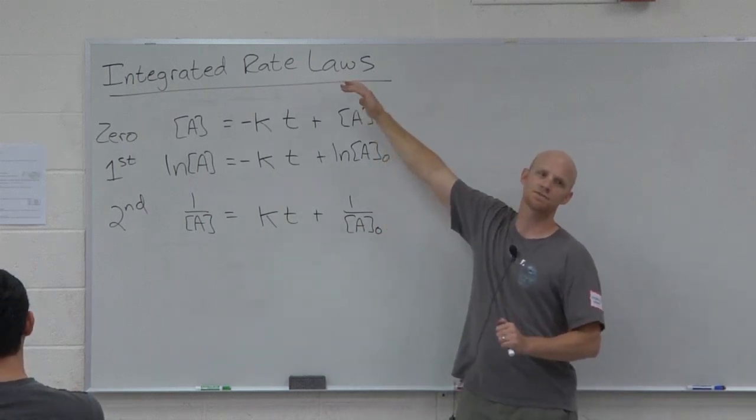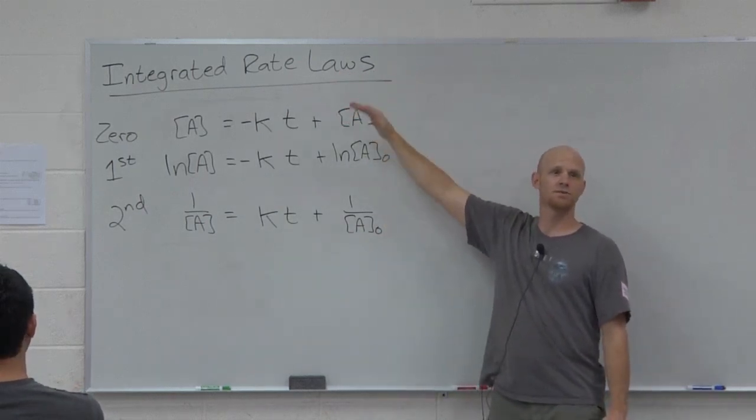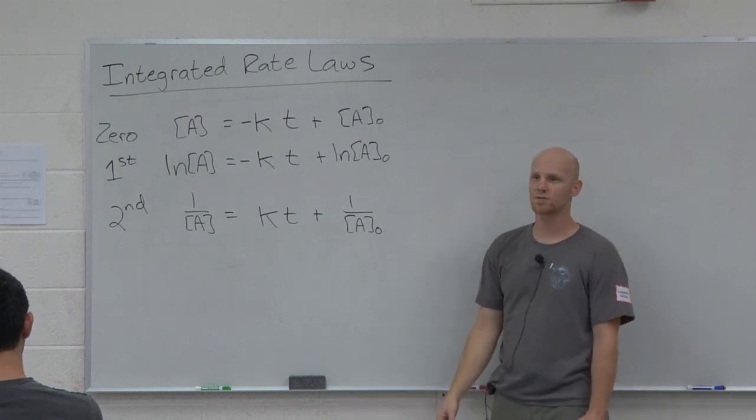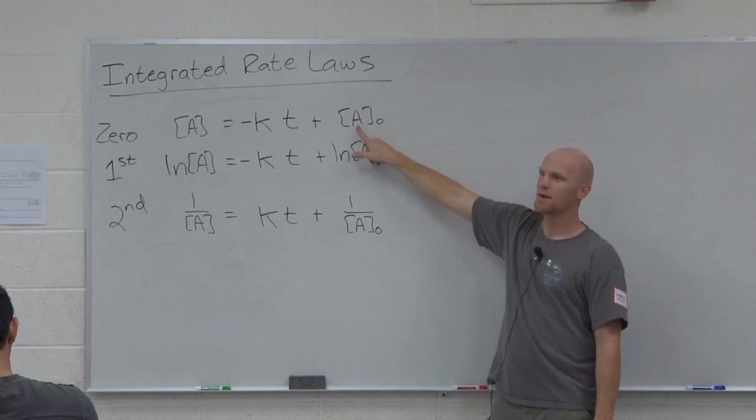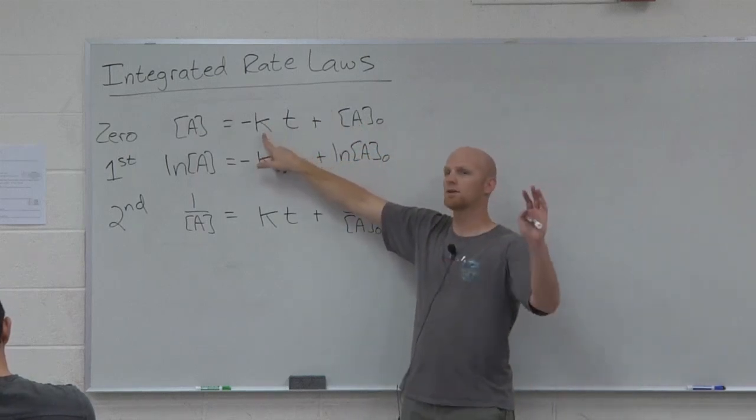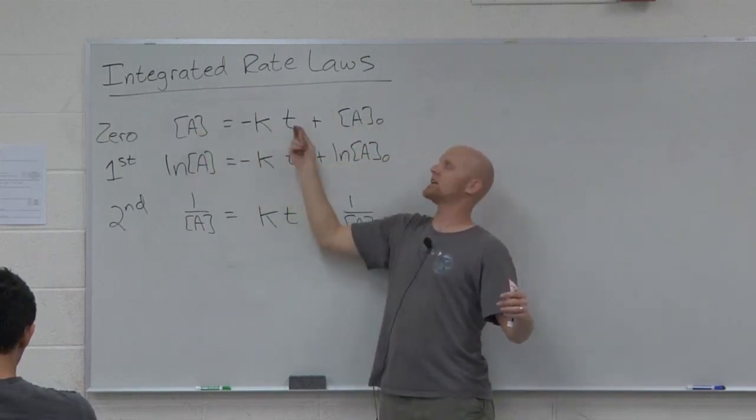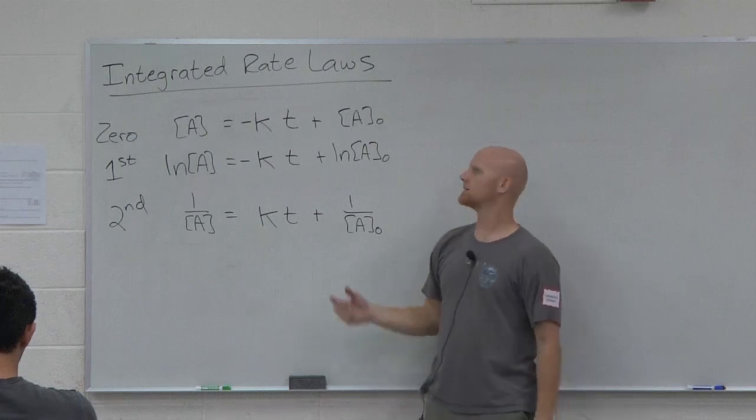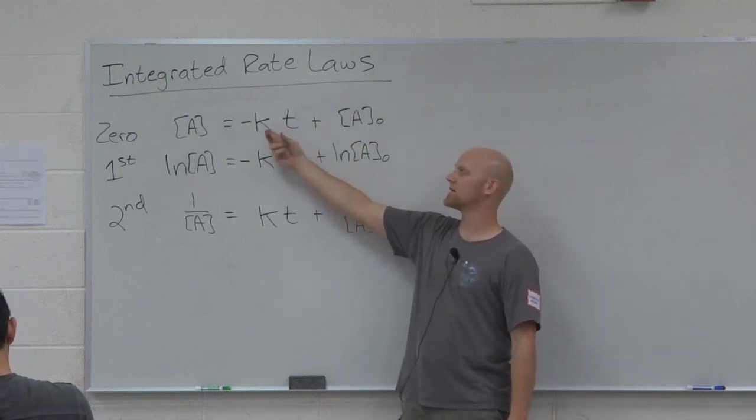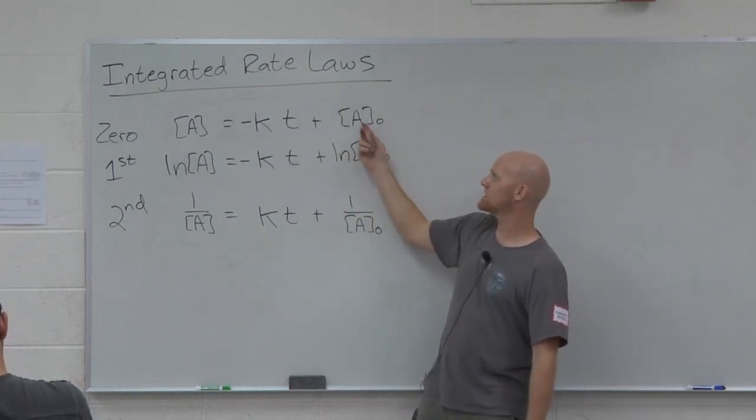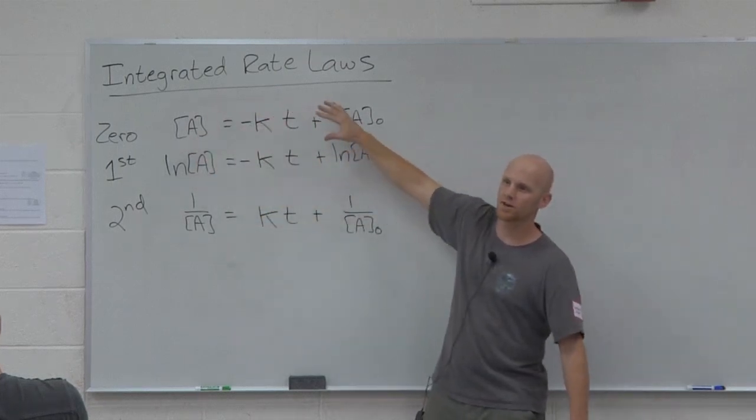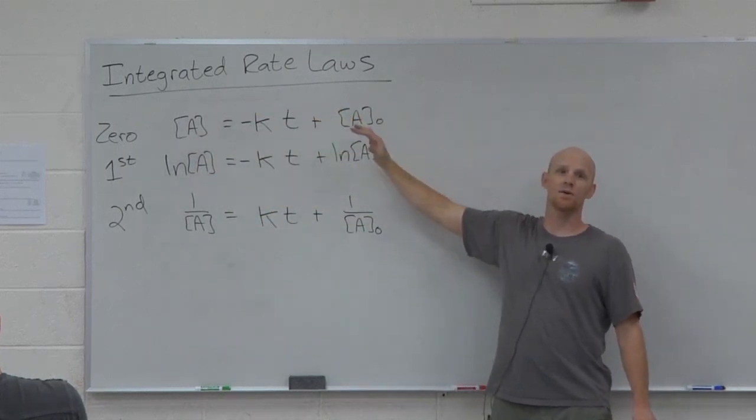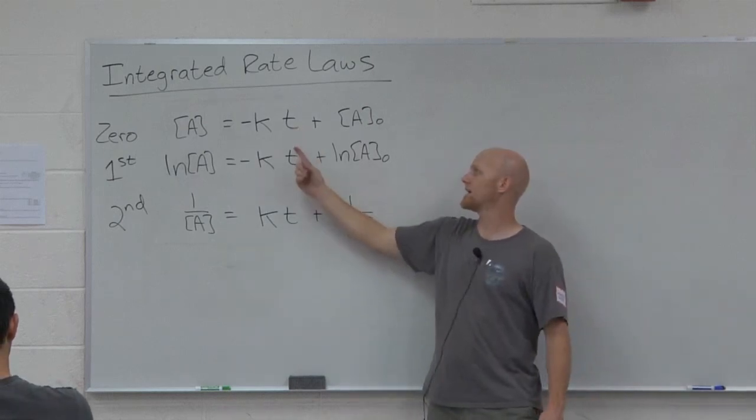The big thing these are used for is they allow you to determine concentration changes over time. Like, let's say I told you your reactant is zero order, and you have this much now, and the rate constant is whatever, how much will you have in 10 minutes? I gave you the time, 10 minutes. I gave you the rate constant k. I said you had this much initially. The only thing you don't know is the final concentration, and it's just plug and chug and solve. That's what the integrated rate laws are for. They allow you to determine concentration changes over time.